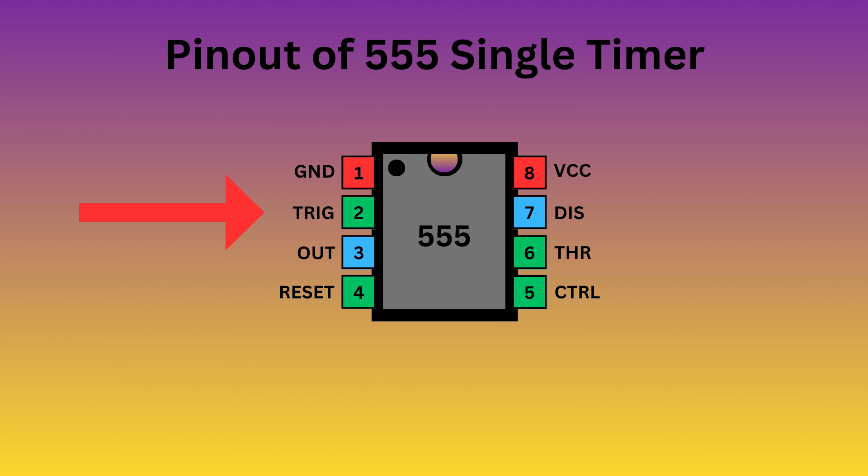Pin 2 is trigger. It is used to start the timing interval in both monostable and astable modes. Pin 3 is output. It delivers the result of the timer's operation based on its mode, either monostable, astable, or bistable.